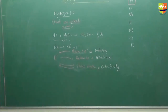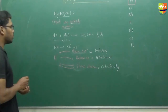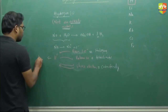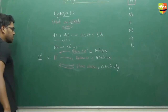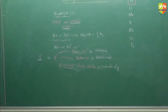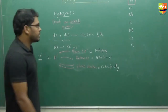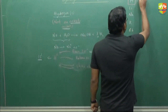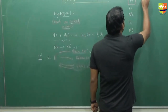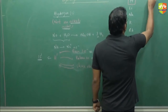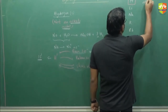Why is it placed in group one? Because its outermost electronic configuration is 1s1. Since the electronic configuration is similar to that of other alkali metals, that is why it is placed in group one — but it is not an alkali metal.